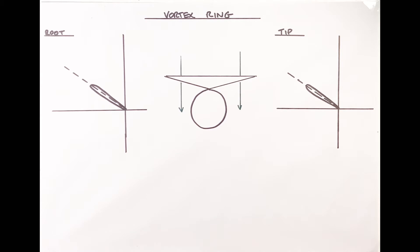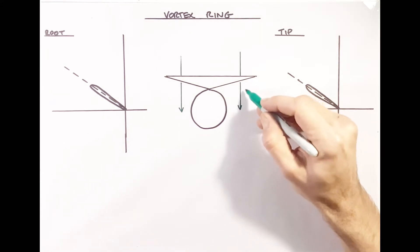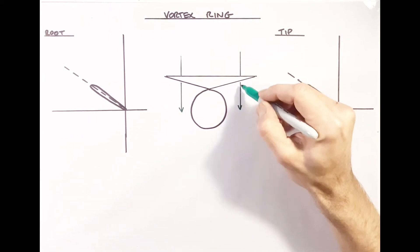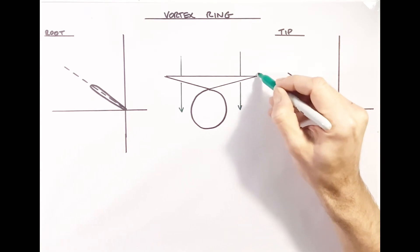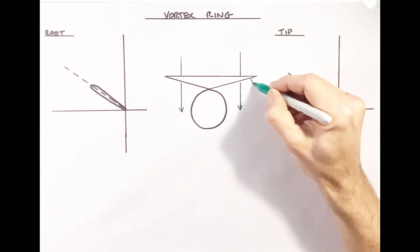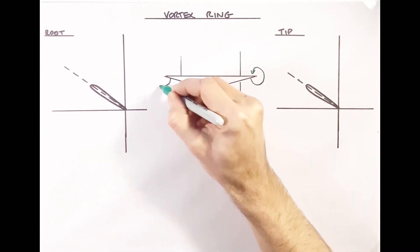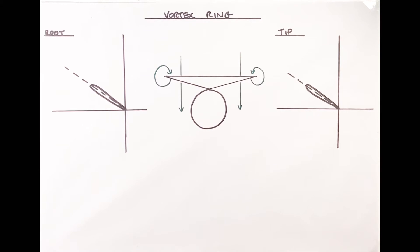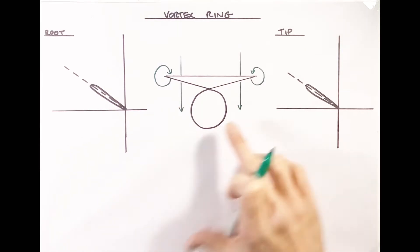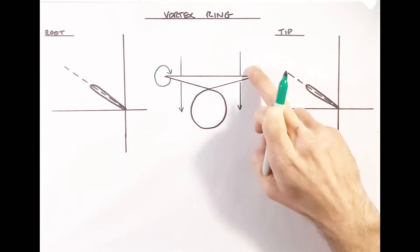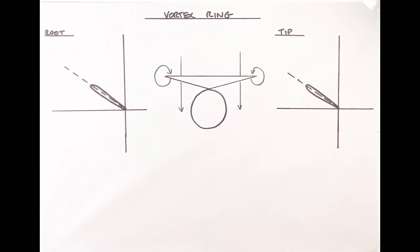We generate tip vortices because there's high pressure underneath the disc and low pressure where the air is being sucked down through it. The air leaks over the edge of the disc, creating tip vortices just like you'd see at the end of an airliner's wing. In translational lift, when we start to move the aircraft forwards, we move away from these vortices. The induced flow comes down through the disc, and the tip vortices exacerbate that induced flow in the region of the tip.